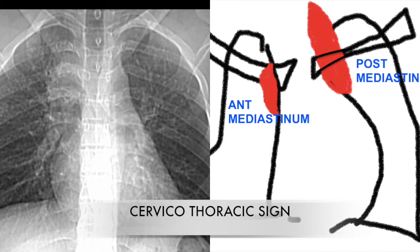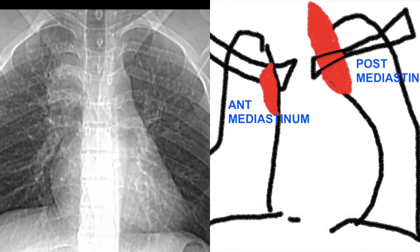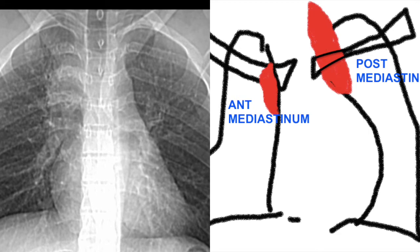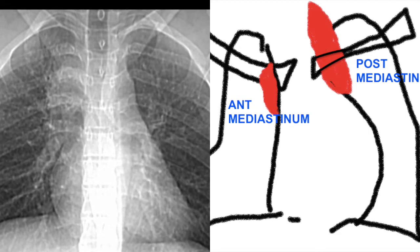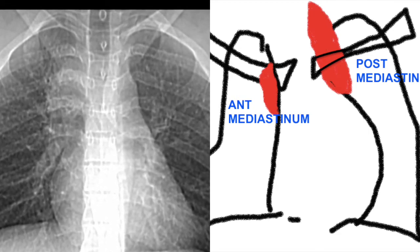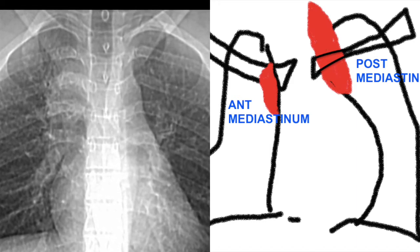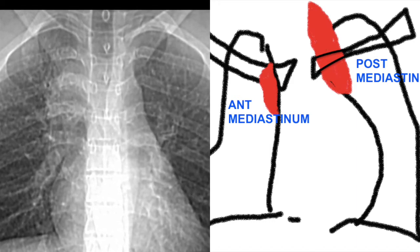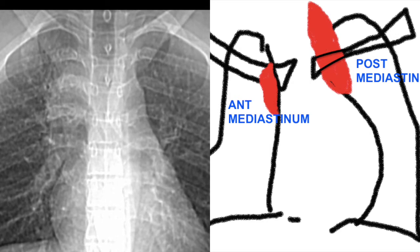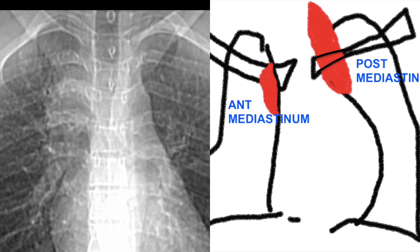This is actually a variation of the silhouette sign known as the cervicothoracic sign, and it helps us to localize the mass whether it is in the anterior or posterior mediastinum based on the chest x-ray. So if a lesion is seen — like in this case — limited by the clavicle and not extending beyond the clavicle, it means that it happens to be in the anterior mediastinum and is usually a lymph node.